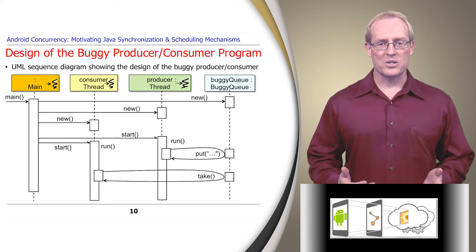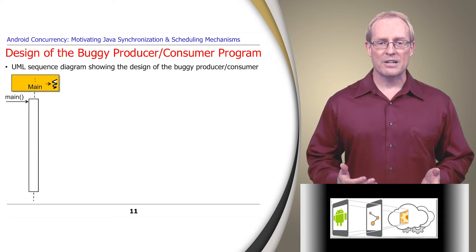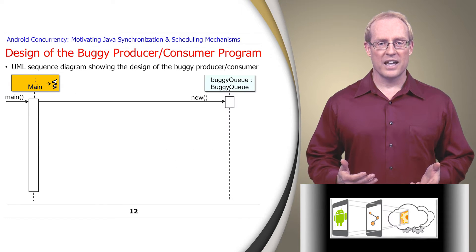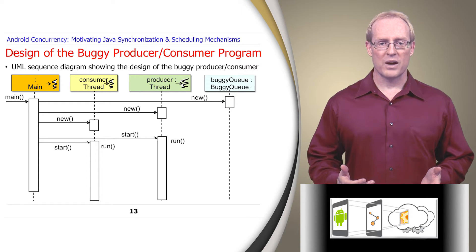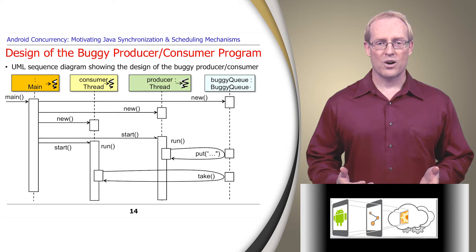This UML sequence diagram shows the design of the program, which has a main entry point method that creates an instance of buggy queue and then creates and starts producer and consumer threads, whose run methods call buggy queue's put and take methods to pass messages concurrently from the producer to the consumer.